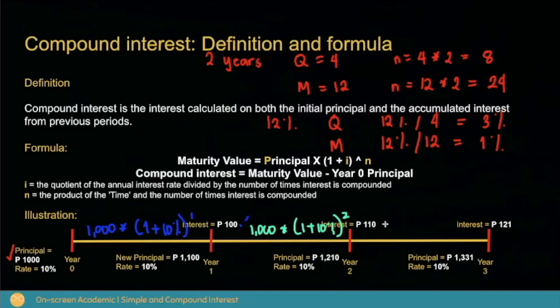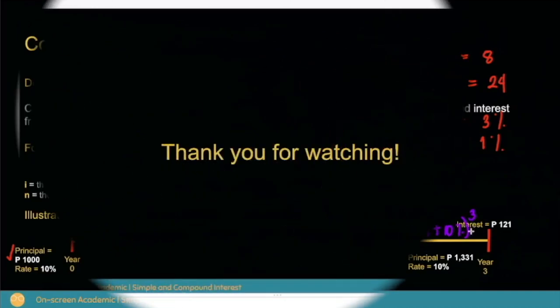Or by simply using the formula for compound interest: 1,000 pesos times 1 plus 10% raised to 3 — the number of years.